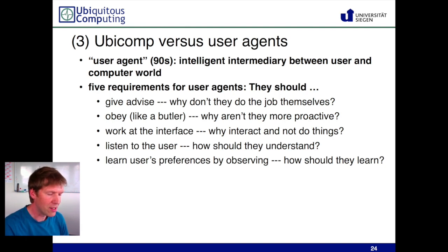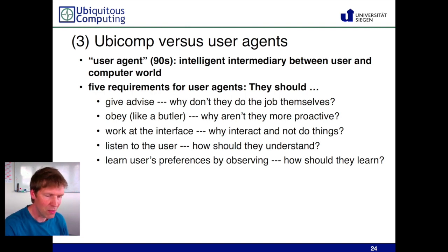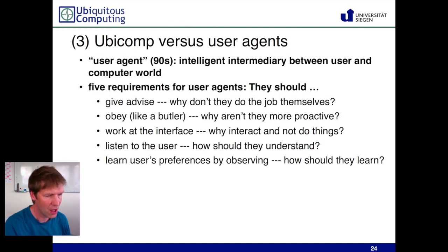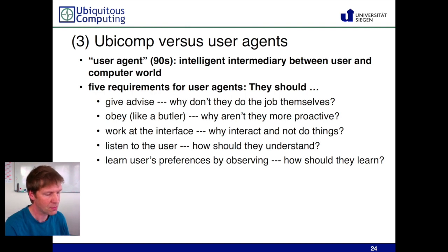The same problem is that these agents tend to work at the interface — popping up, asking a question for which you then need to find and select an answer. Why would this interaction be necessary? The fact that they would have to listen to the user means you would have to have a dialogue and hope the agent would understand everything you explain. How would they be able to understand almost anything you could tell them? Those in the 90s would not be as advanced as today's natural language processing engines, and even today this remains very critical.